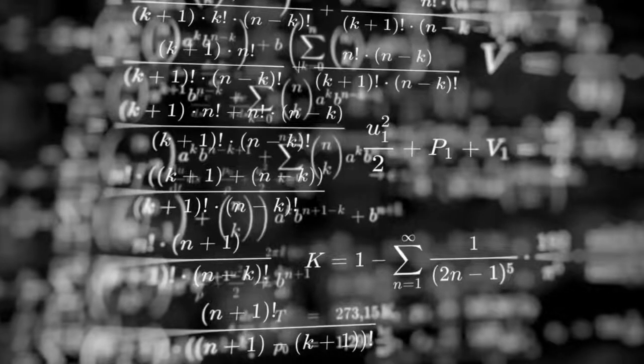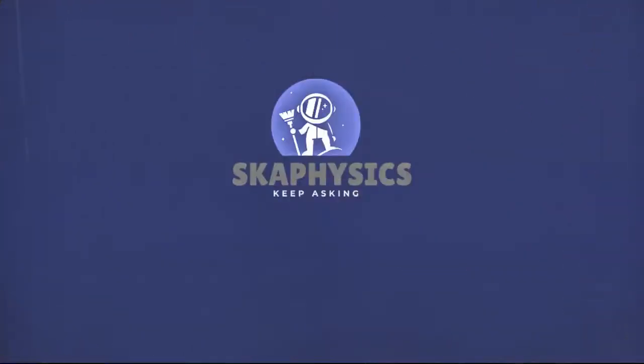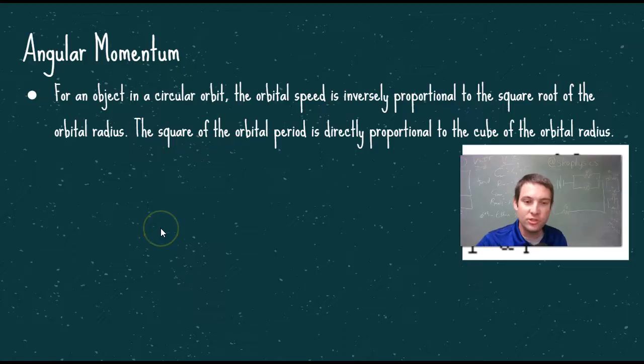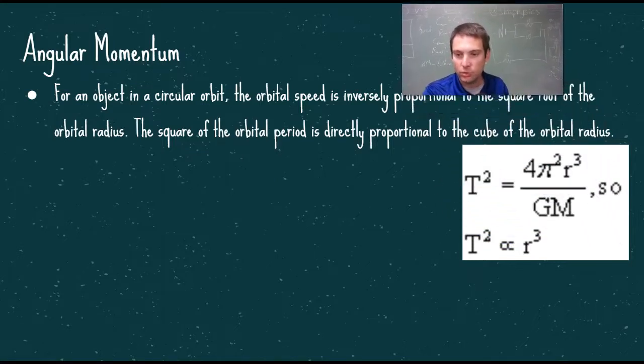Planetary motion. For an object in circular orbit, the orbital speed is inversely proportional to the square root of the orbital radius. The square of the orbital period is directly proportional to the cube of the orbital radius, as shown here.